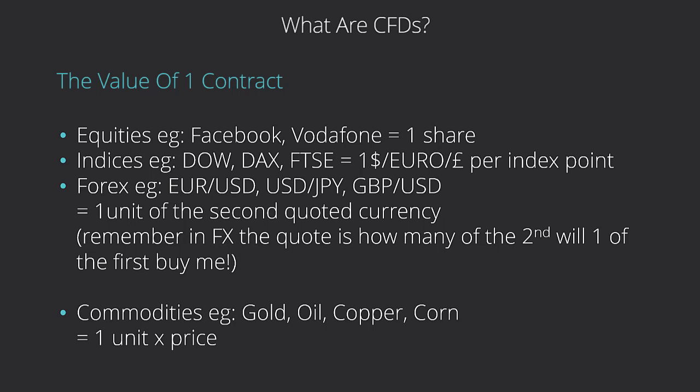We touched on the value of a contract using some indices examples with going long and short. Let's have a look at the broad things we may trade: equities, indices, forex, commodities. For equities, one CFD contract is going to be one share — very simply put. If you're buying one share of Facebook or one share of Vodafone, that is one CFD. Just double-check this with your broker, but the majority of the time this is how it works.